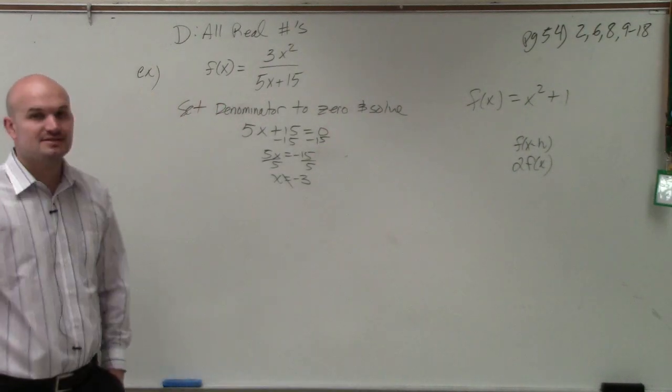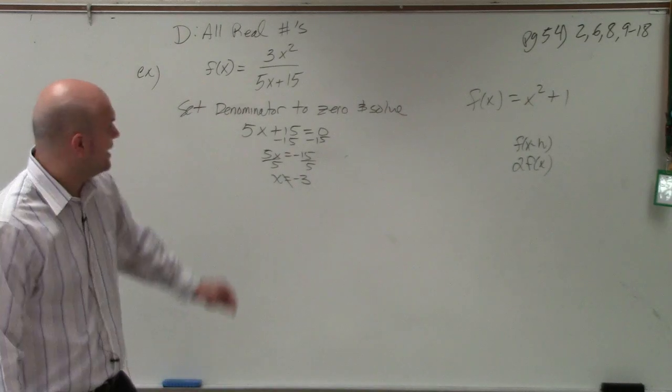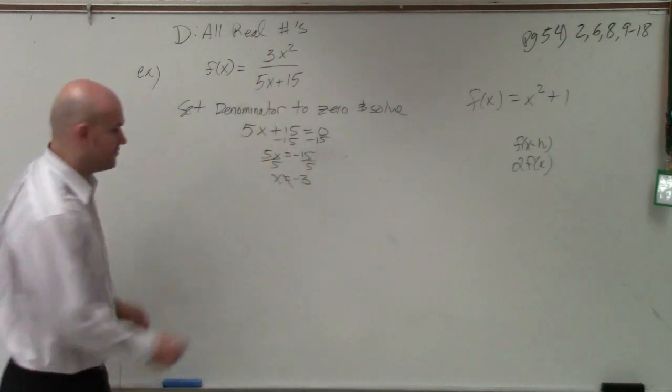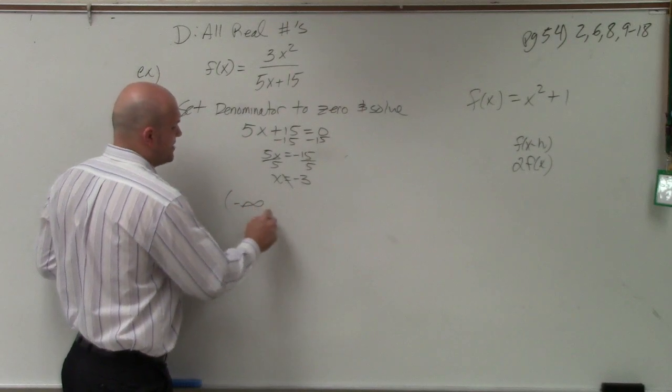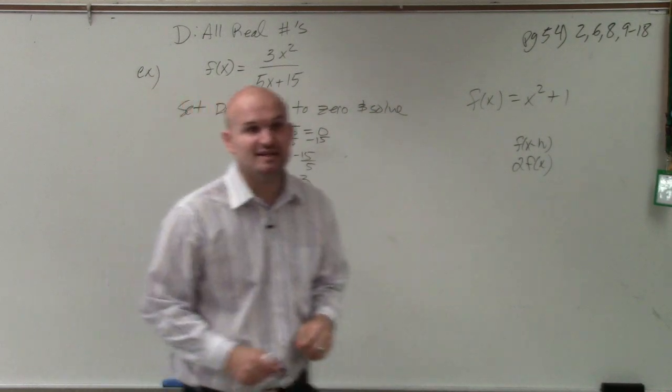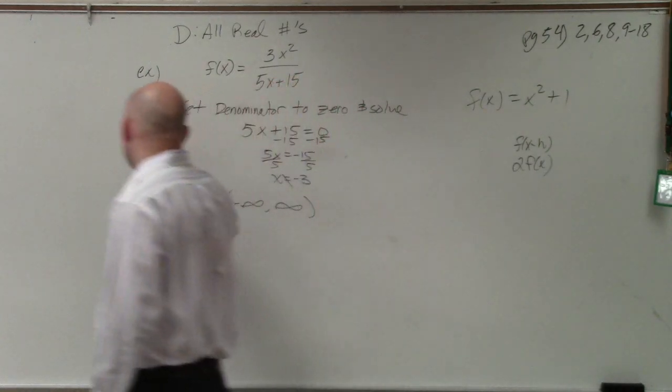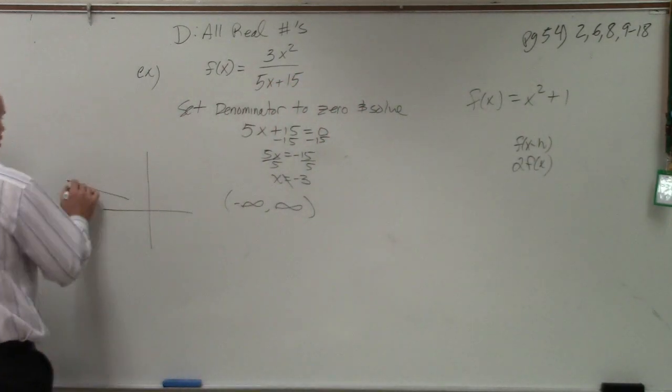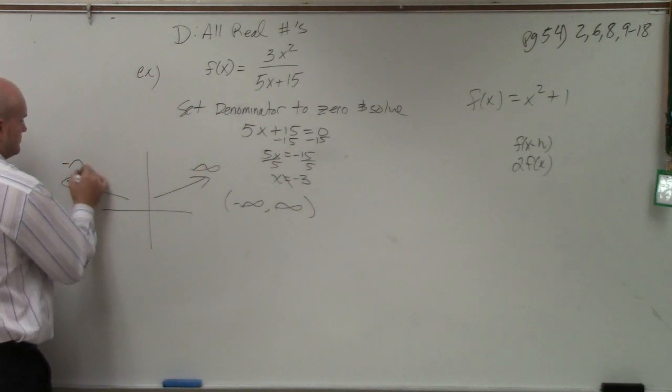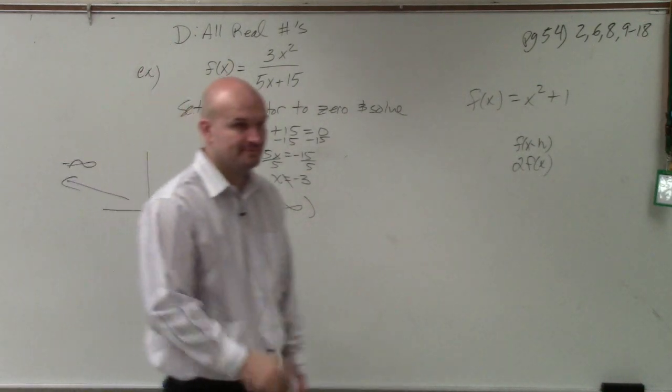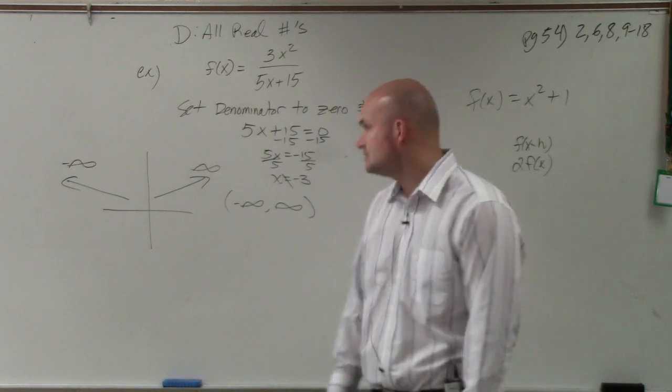So here's how you write this in interval notation. I don't want you guys to write all real numbers. We're going to be practicing interval notation. So all real numbers can be written like this: negative infinity to infinity. On a graph, you're going all the way to negative infinity, all the way to positive infinity.